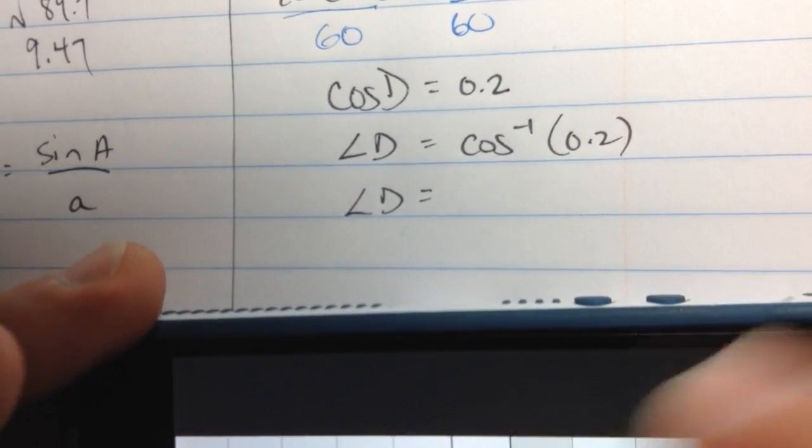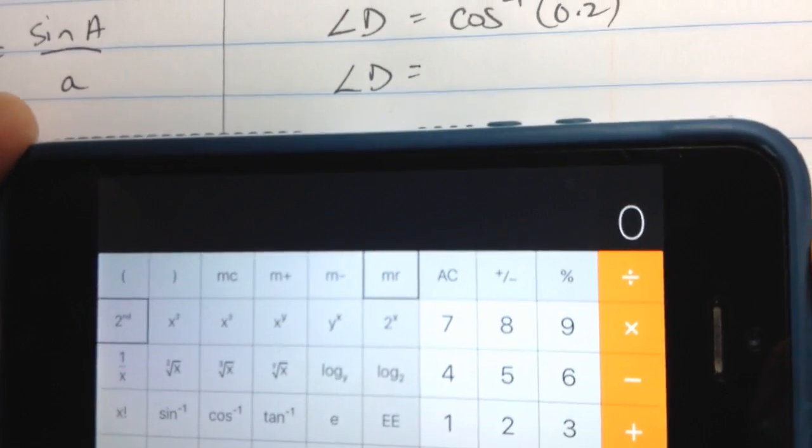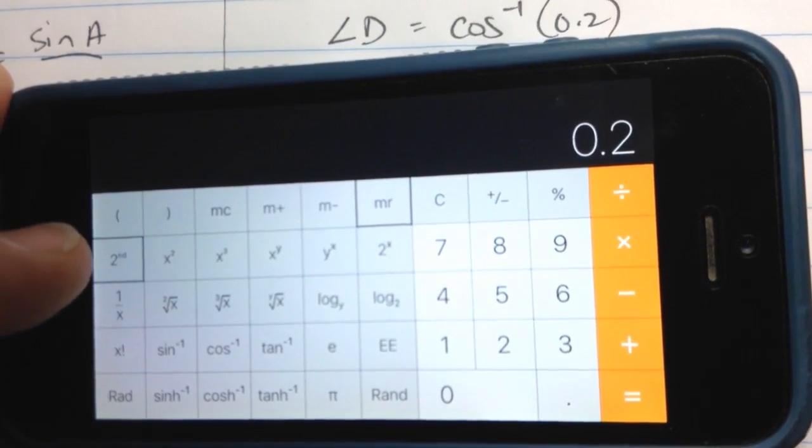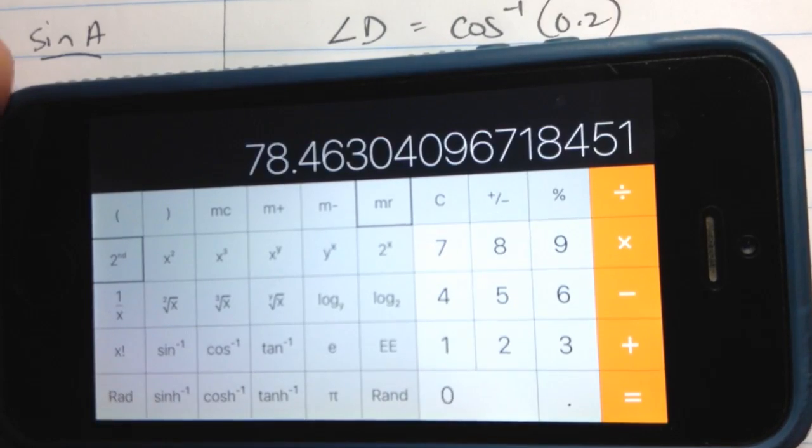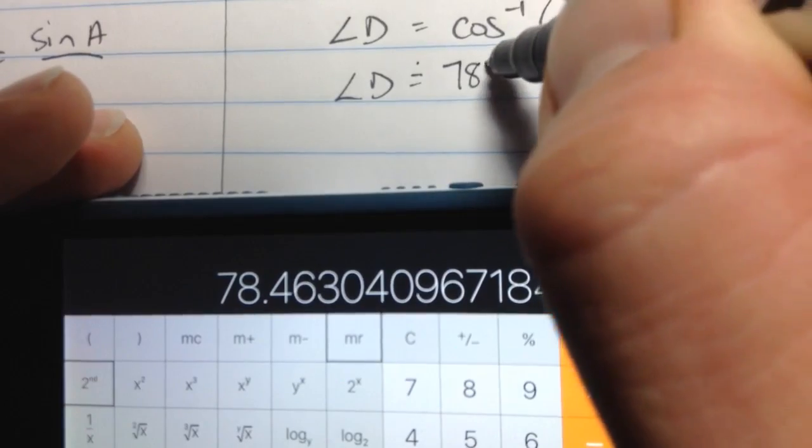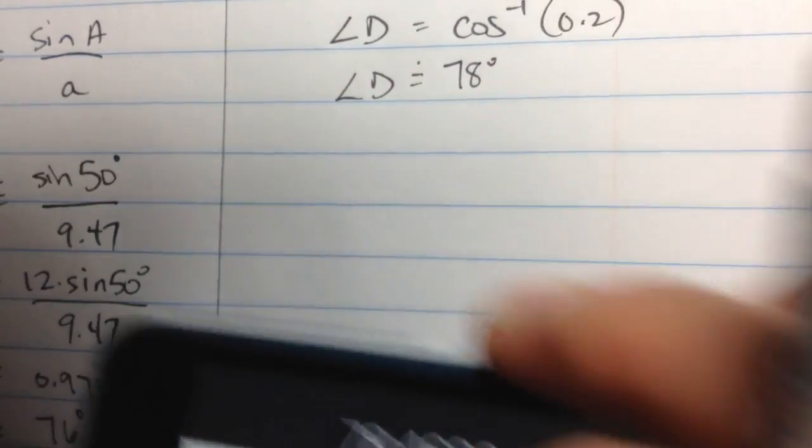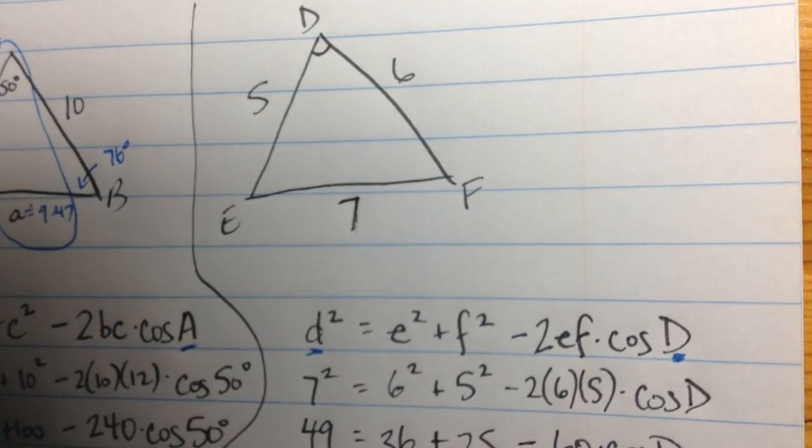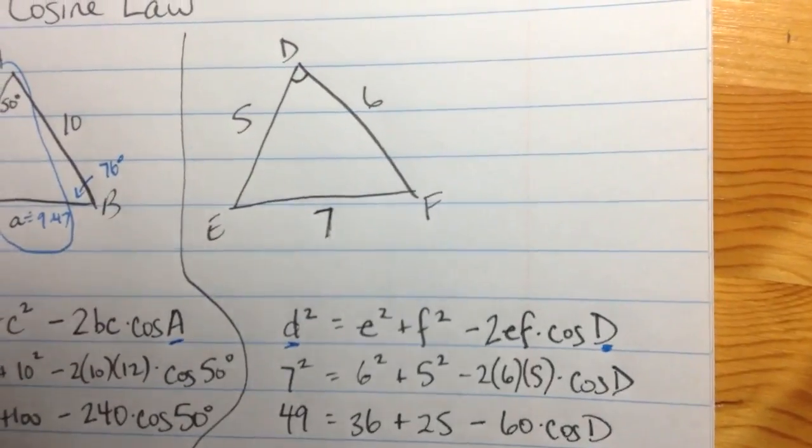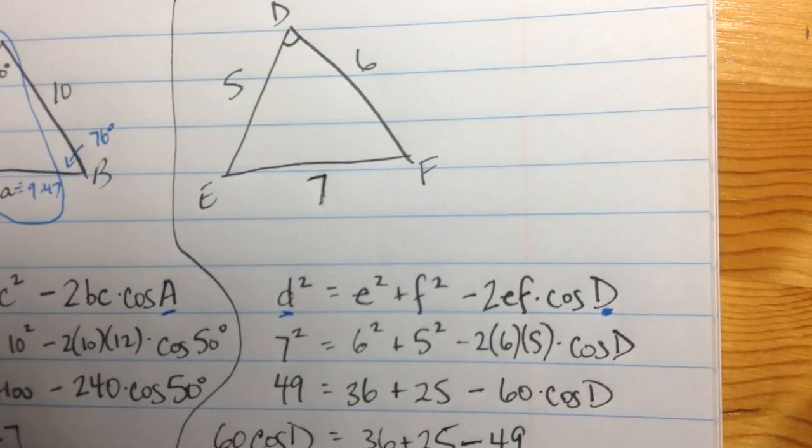Now I grab my calculator again, to find cos inverse of 0.2. I'll type in 0.2. I'm on 2nd function, and I'll press the cos inverse button. And there we go. It looks like it's about 78 degrees. 78.4. If I fill it in up here... Oh, my camera's drifting down. That's what's going on. Everything was getting very large. If I write that in up here, 78 degrees, notice what we now have.